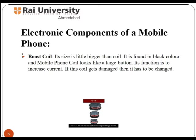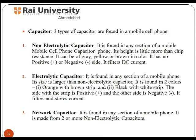A boost coil is slightly bigger than a regular coil. It is found in black color; the mobile phone coil looks like a large button, and its function is to increase current. Capacitor is one of the major components used in mobile phones. There are three types: the non-electrolytic capacitor, found in any section of a mobile phone, whose height is slightly more than a chip resistor; the electrolytic capacitor, which is larger, found in orange with brown strip or black with white strip — the strip side is positive and the other side is negative; and the network capacitor, found in any section, made from two or more non-electrolytic capacitors.